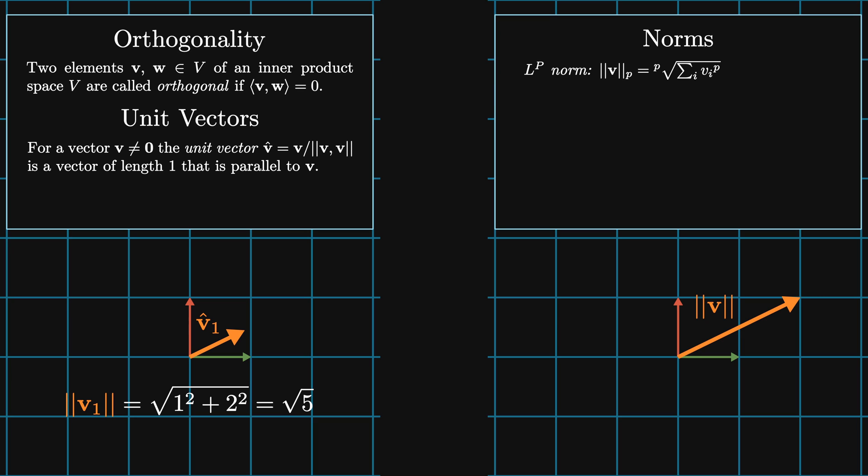Three interesting LP norms are the Euclidean norm, or the L2 norm, which is the familiar magnitude of a vector in Euclidean space. For example, this vector has length equal to the square root of five. The taxicab or Manhattan norm is the L1 norm. It measures distances when you're restricted to move only left and right or up and down. It's equal to the sum of the absolute value of the components of v. Our vector has taxicab norm equal to three.